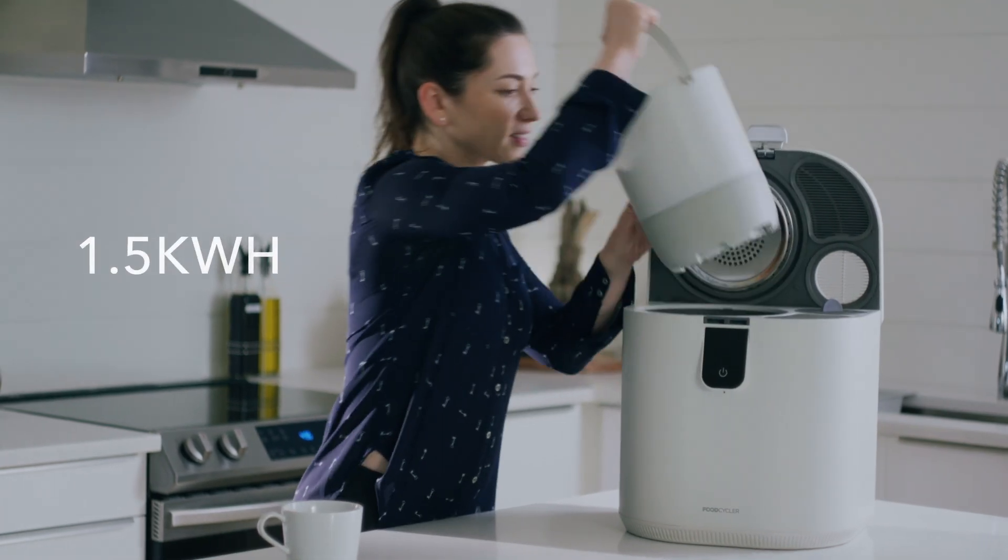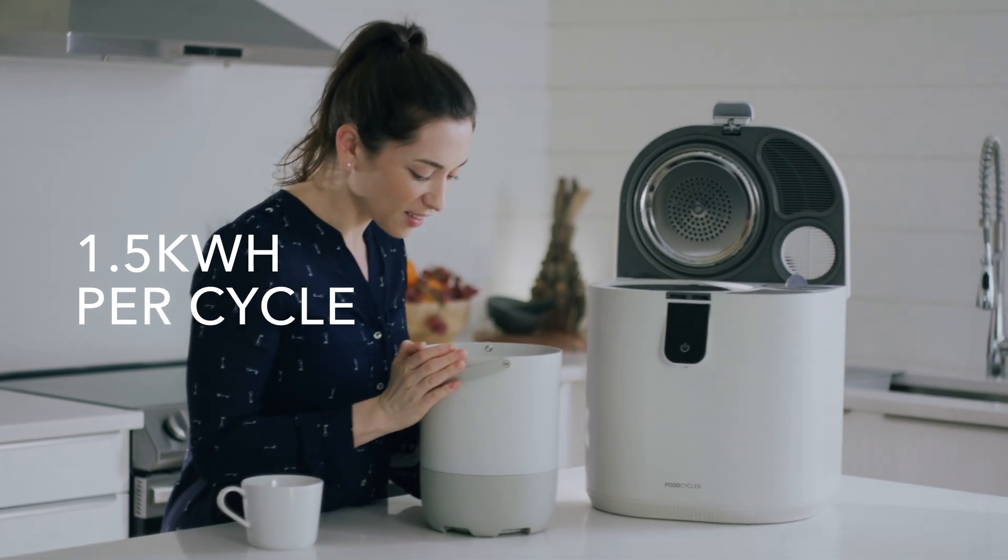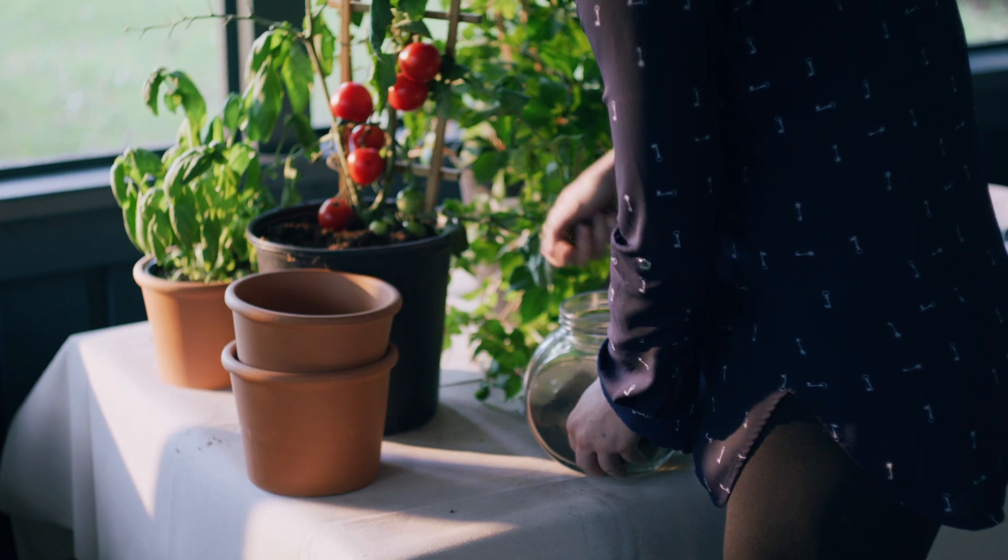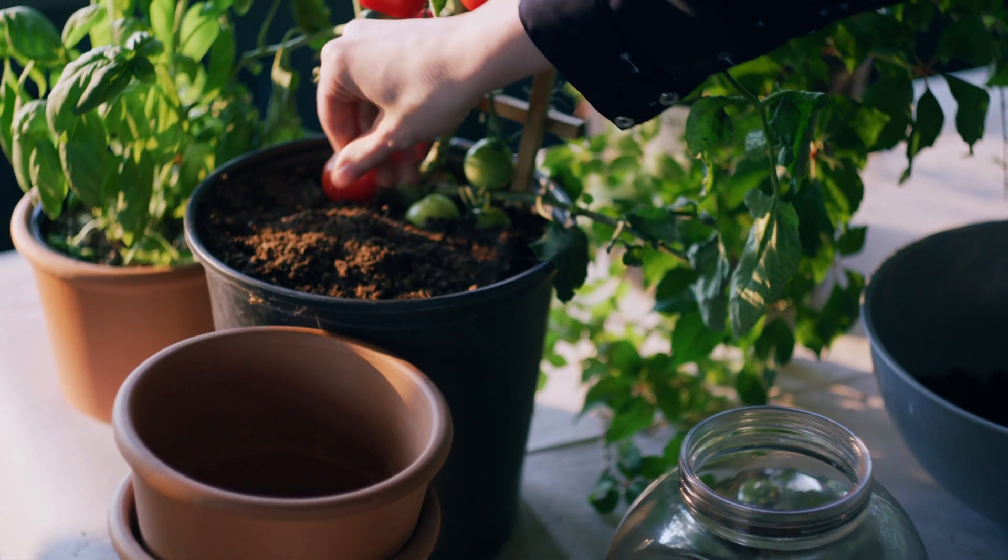Using only 1.5 kWh per cycle, the FoodCycler Eco5 breaks down food waste quietly, efficiently and odorlessly.